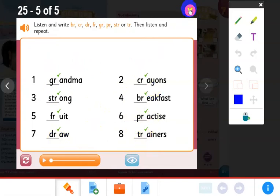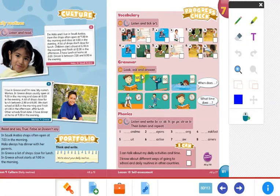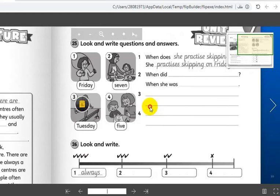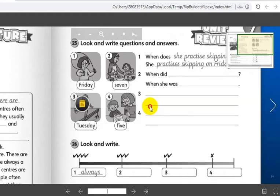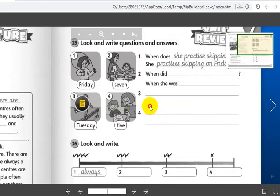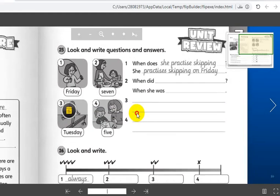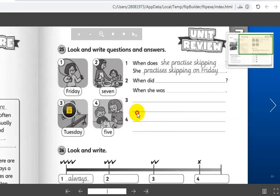That's all for pupil's book. It's time now to go to the other book, the activity book on page 77. This is for our activity book. We have four pictures and we have to ask questions about them and find the answers to these questions. Number one is done for you. When does she practice skipping? She practices skipping on Friday, as you can see here.